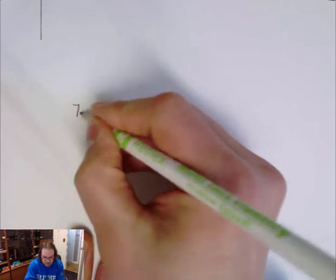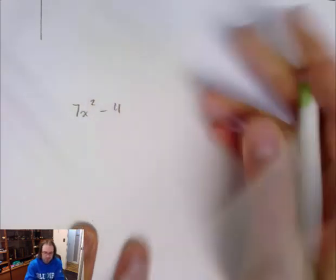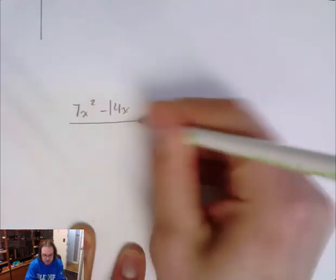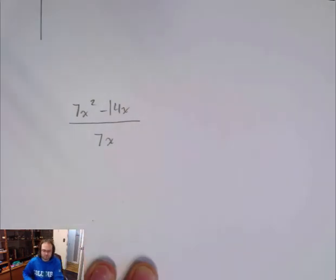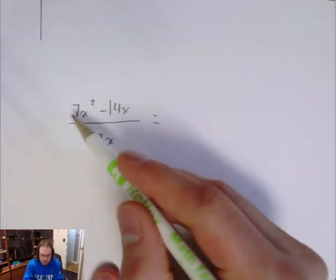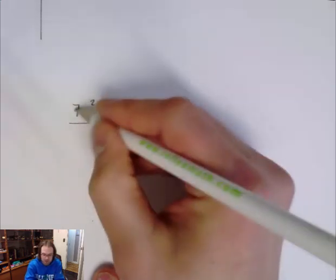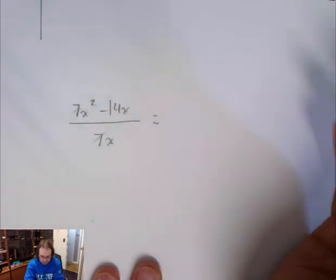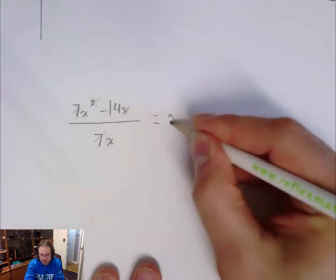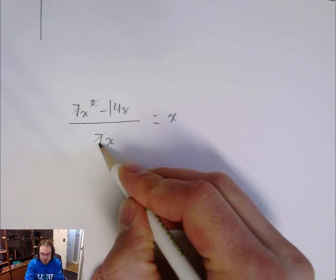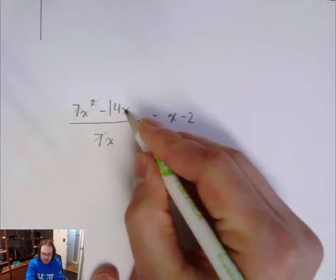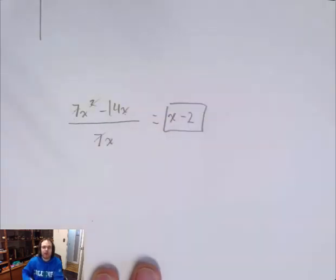Now we're going to do an example or two concretely. Let's say I have 7x squared minus 14x, and I want to divide this by 7x. We have to use the distributive property, so I'm going to have to take 7x squared divided by 7x. 7 divided by 7 is 1, and x squared divided by x is x, so that leaves me with x. Then negative 14 divided by 7 is negative 2, and x divided by x is 1. So my answer is just x minus 2.